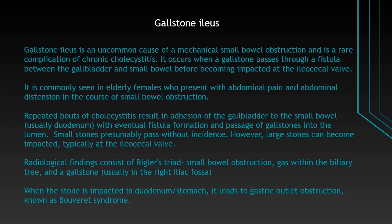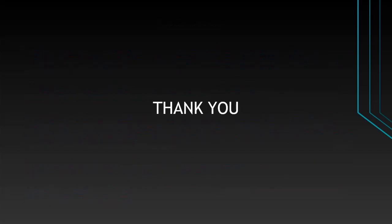Radiological findings consist of Rigler's triad, which is small bowel obstruction, pneumobilia, and a gallstone usually in the right iliac fossa at the ileocecal valve. When the stone is impacted in the duodenum or stomach, it leads to gastric outlet obstruction known as Bouveret syndrome. Thank you for watching.